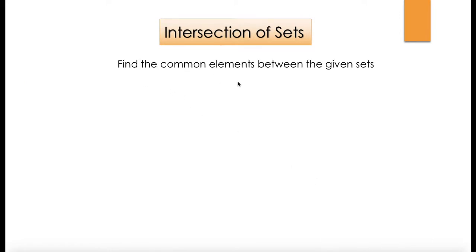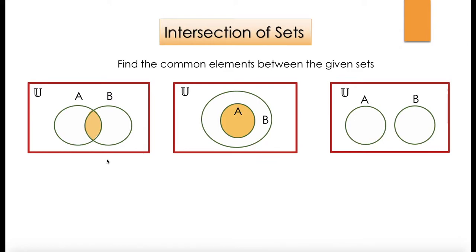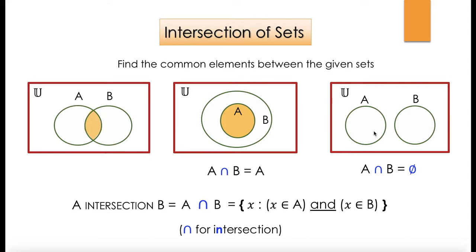For intersection of sets, we find the common elements between the given sets. We looked at three different types of diagrams and the shaded portion gives us the intersection or the common elements. A intersection B is written as A, the ∩ symbol, and B, and we say X is an element such that X belongs to A and X belongs to B. N is for intersection. Here A intersection B is A itself, because the commonality between A and B is the set A. And in the disjoint case, A intersection B is an empty set.